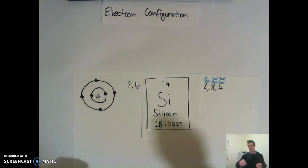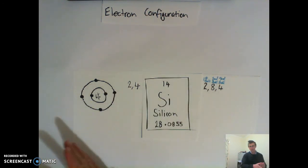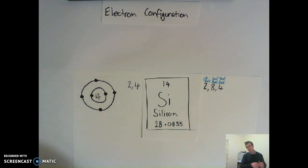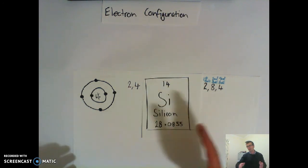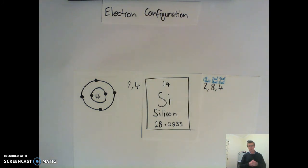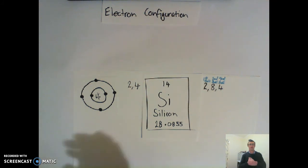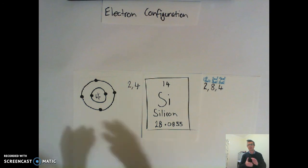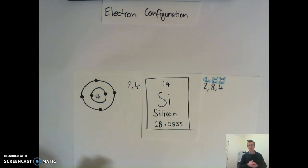So hydrogen and helium, lithium, beryllium, boron, carbon — do it all in order. Do the Lewis dot diagram, and then do the electron configuration for every single one of the top 20 elements. This is going to be really important for the next video, where we're going to move on to ions.